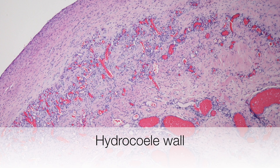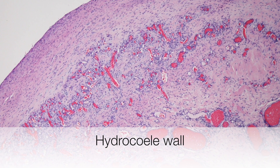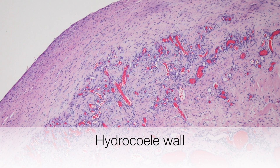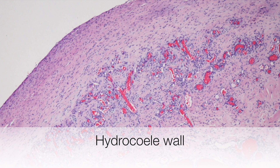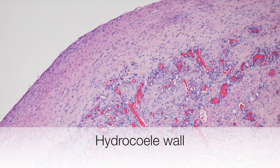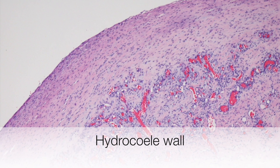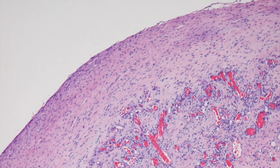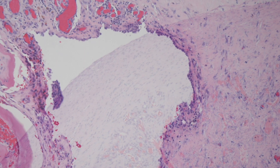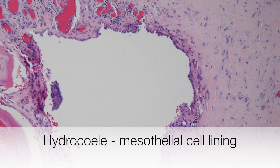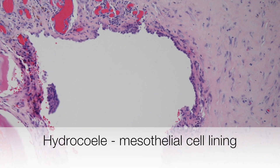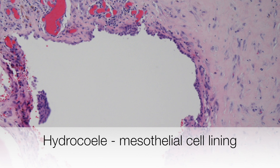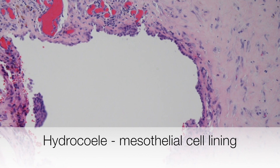This is the histological appearance of the wall of the hydrocele. It is composed of rather vascular fibrous tissue, and the surface is lined by flattened mesothelial cells. In this area, the lining cells of the hydrocele are easier to see, and they are cuboidal mesothelial cells.